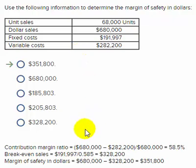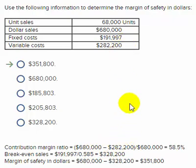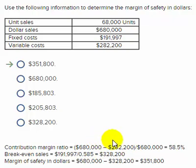To get break-even sales, we need to figure out the contribution margin ratio. That's sales dollars of $680,000 minus the $282,200 in variable cost. Sales minus variable cost gives you contribution margin. So contribution margin divided by sales of $680,000 gives you a contribution margin ratio of 58.5%.